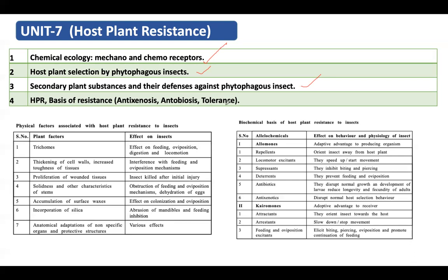The mechanism of resistance includes antixenosis, antibiosis, and tolerance. Antixenosis is also called non-preference — it is a plant characteristic that leads the insect away from the particular host. This may be due to morphological characteristics of the plant or chemical characteristics of the plant.